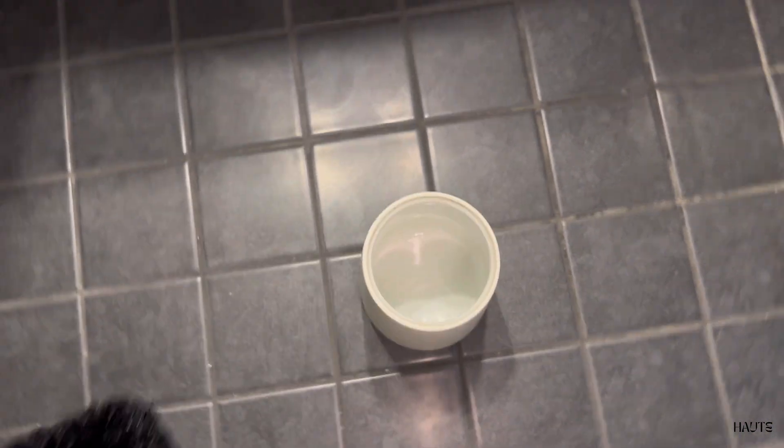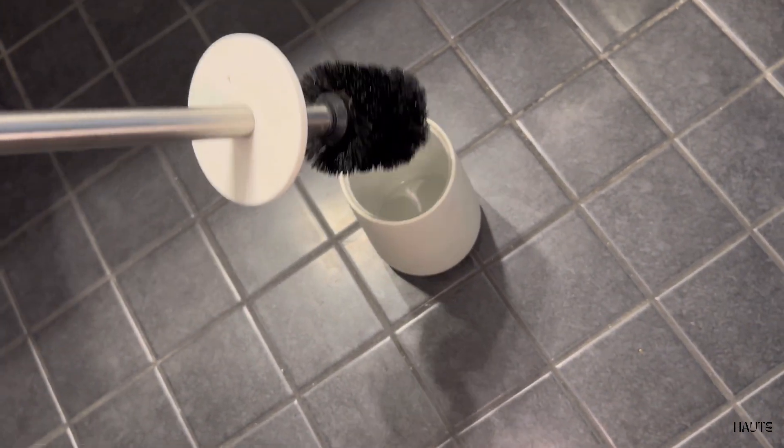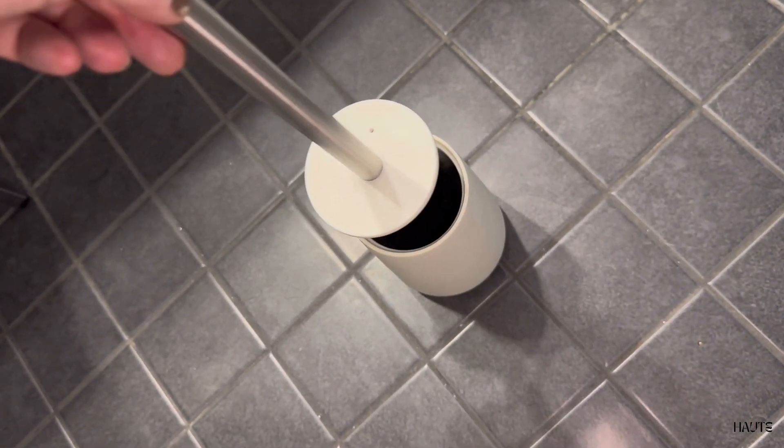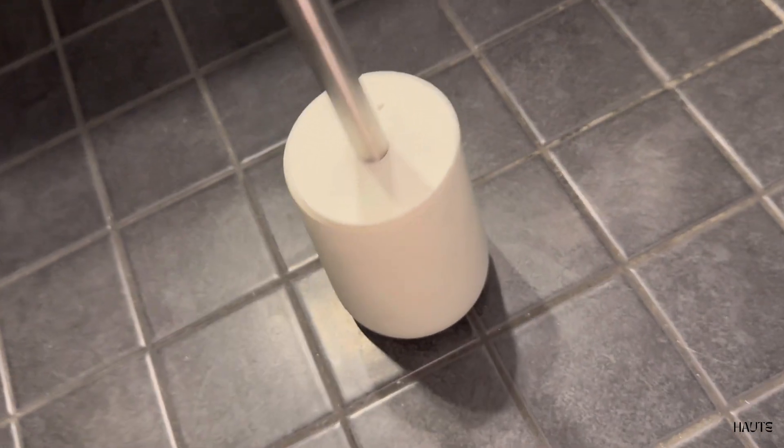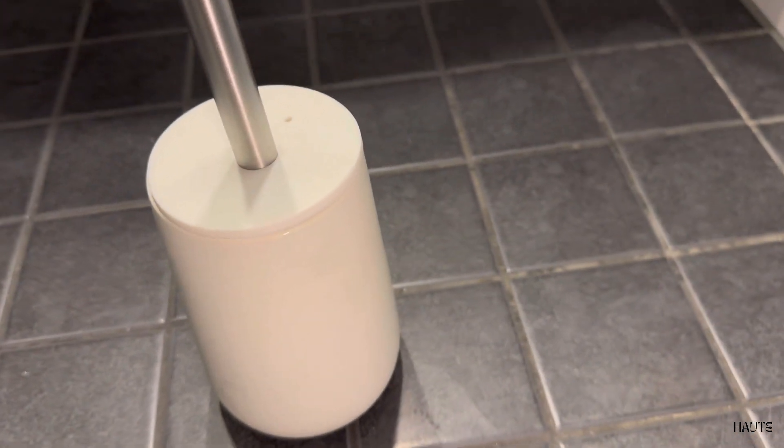The inside of the ceramic bowl is covered in silicone which makes it super easy to clean and keep fresh. The white top is also made of silicone and it fits perfectly on top of the ceramic bowl.